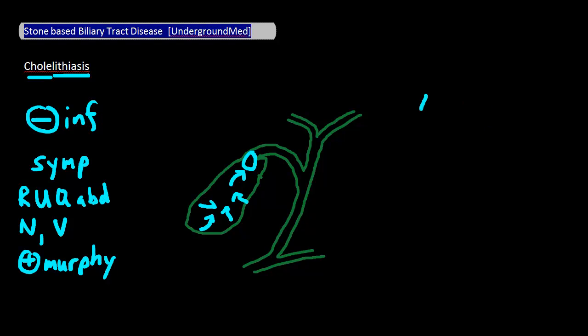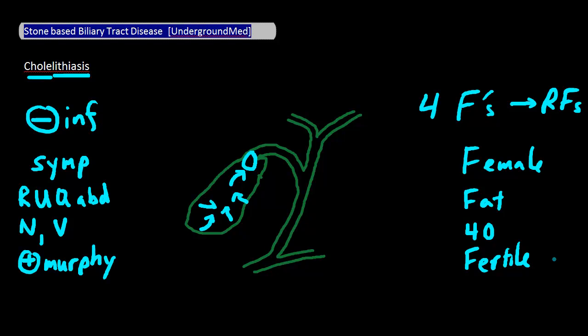Something you hear a lot are the four F's as risk factors for cholelithiasis: female, fat, 40, and fertile. While this is a good way for you to remember this, please don't share this with your patient. I don't think they'll be too happy with being called these four things.